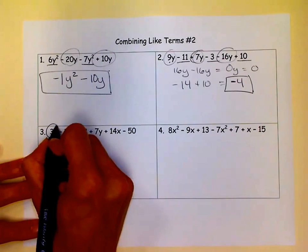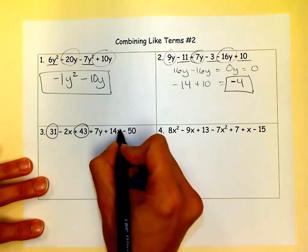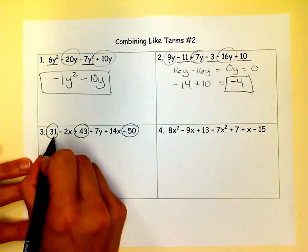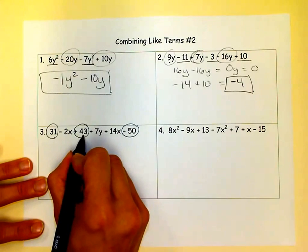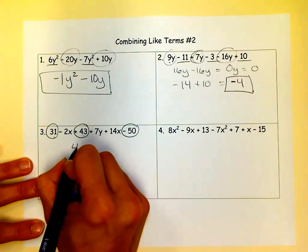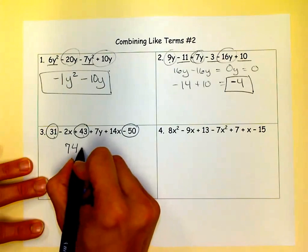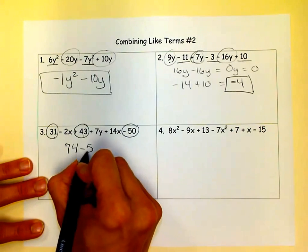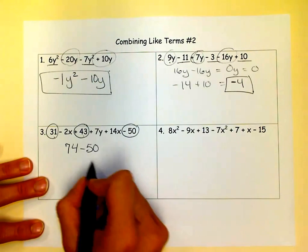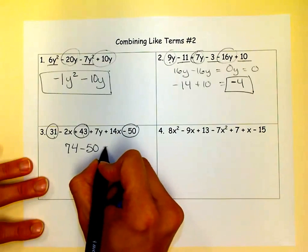Okay, here. We'll start with our numbers since it's our first term. And these are our numbers. So 31 plus 43. 1 plus 3 is 4. 3 plus 4 is 7. So that's 74. And then I have to combine it with the 50, since it's a like term. 74 minus 50 is 24.